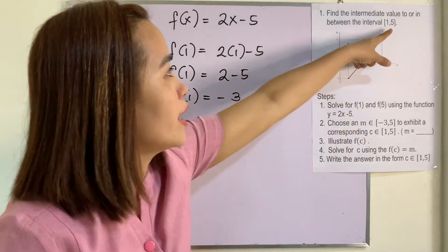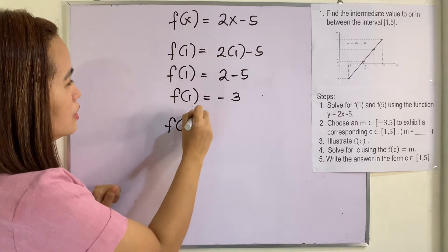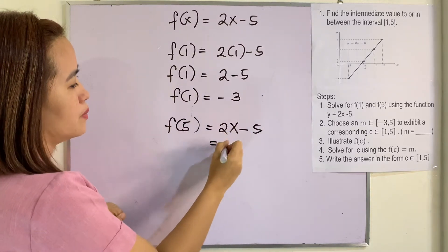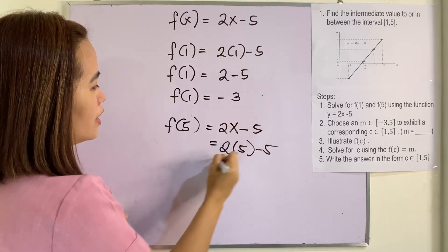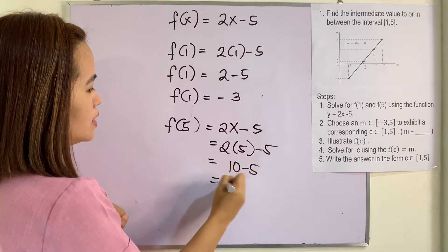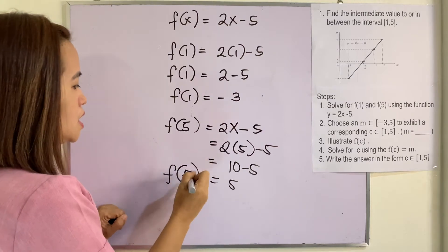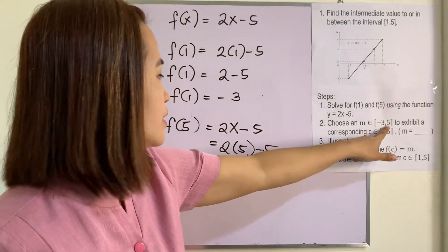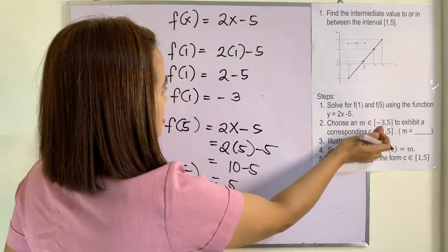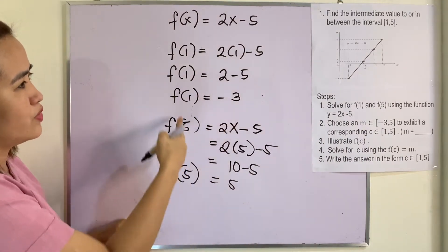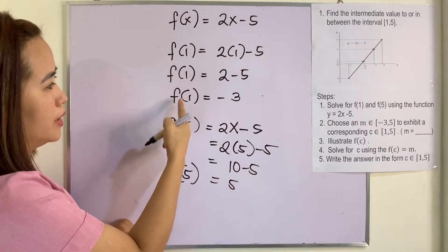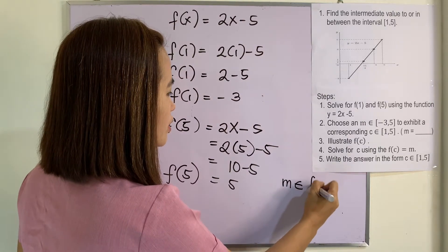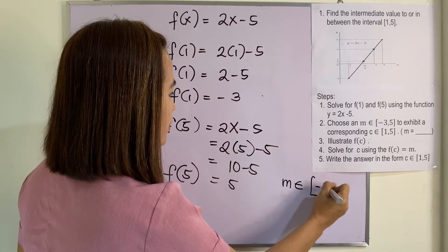The next one is f(5). That is f(5) equals 2 times 5 minus 5, so this is 10 minus 5, which is equal to 5. So f(5) is equal to 5. Choose an m which is an element of [-3, 5]. Where did we get this [-3, 5]? This interval is found by evaluating f(1) and f(5). So m is an element of the interval [-3, 5].